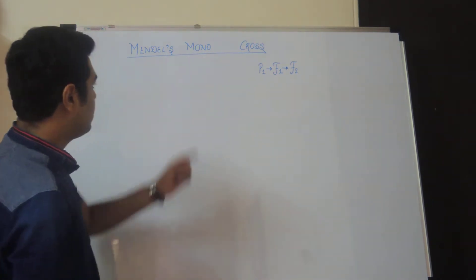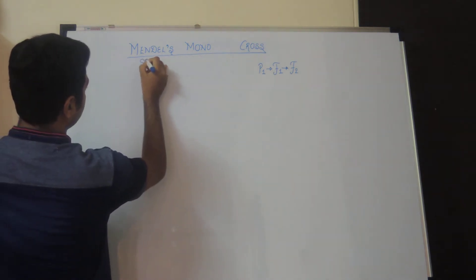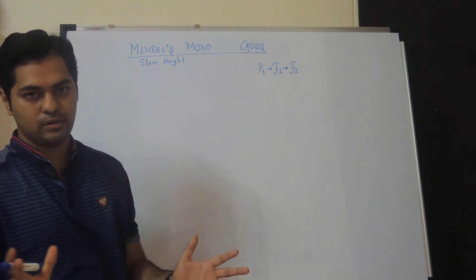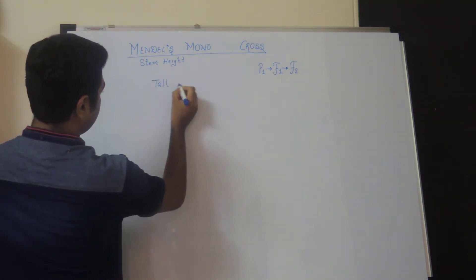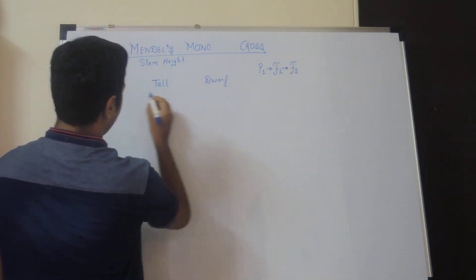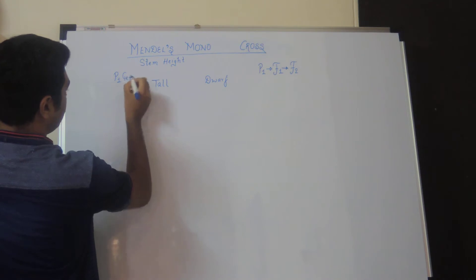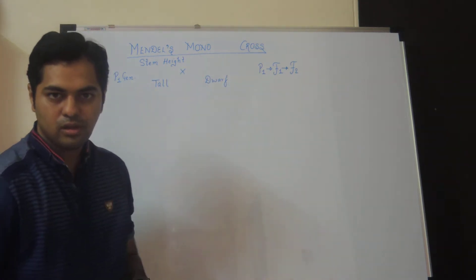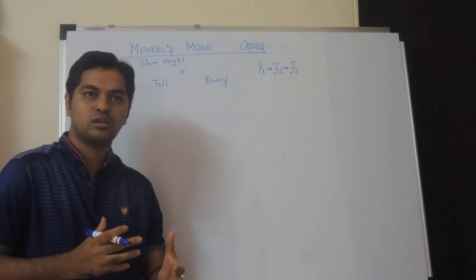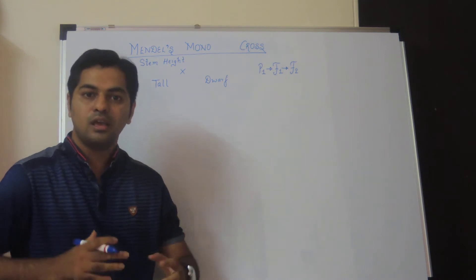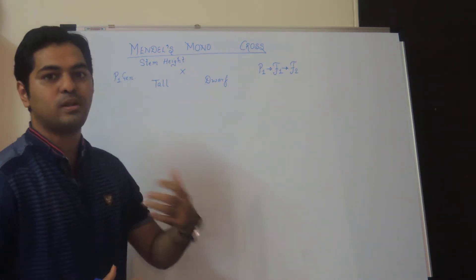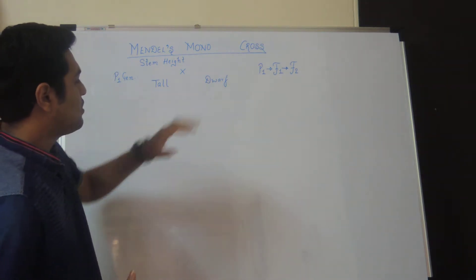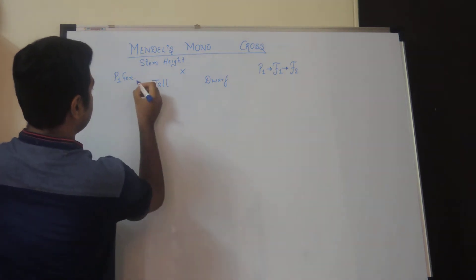Suppose we take the single contrasting trait in reference to stem height of the pea plant. This characteristic feature — height — has two alternative traits: tall and dwarf. The two plants are taken as the P1 (parental) generation and both parents are crossed. Mendel did not know which feature was dominant and which was recessive; he experimentally concluded that the feature expressed in F1 is dominant, and the one not expressed is recessive. The parents were always taken pure.